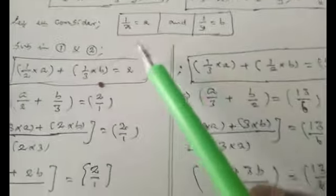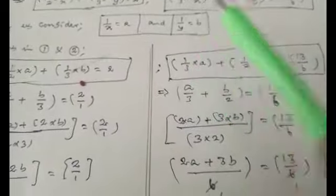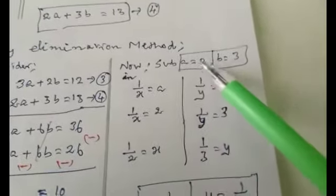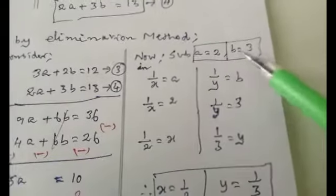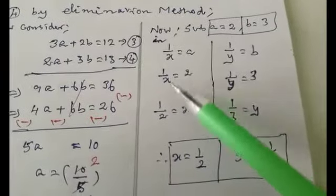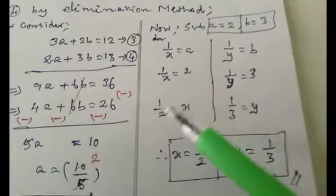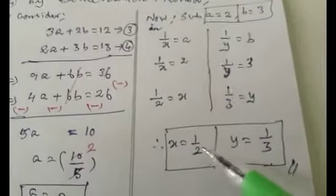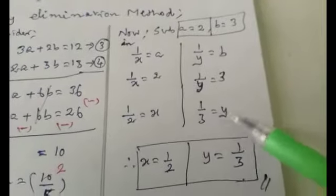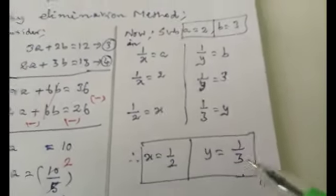Our aim is to find x and y. We assumed 1/x = a and 1/y = b. Replacing a = 2: 1/x = 2, so by cross multiplication x = 1/2. Replacing b = 3: 1/y = 3, so by cross multiplication y = 1/3. Therefore x = 1/2 and y = 1/3.